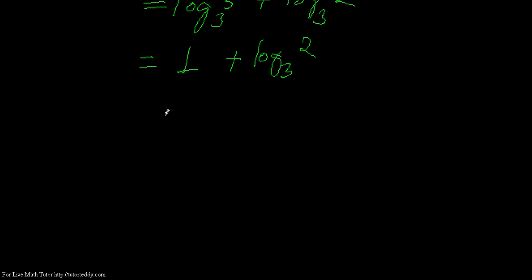Next what do we do? So it means that log 6 base 3 will be a rational number if log 2 base 3 is a rational number.